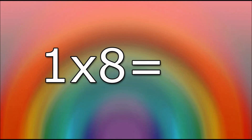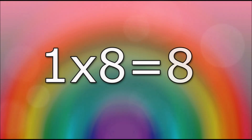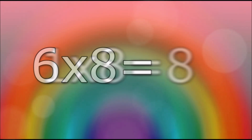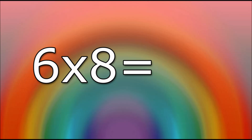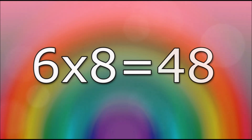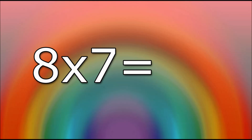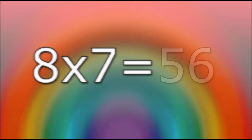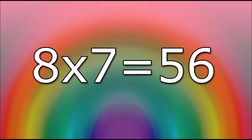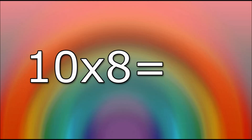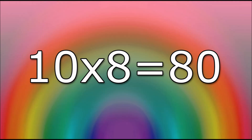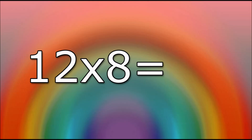1 times 8 equals 8. 6 times 8 equals 48. 8 times 7 equals 56. 10 times 8 equals 80. 12 times 8 equals 96.